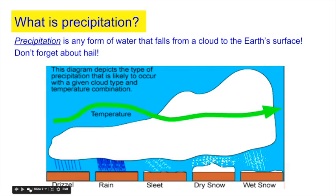What is precipitation? Precipitation is any form of water that falls from a cloud to the Earth's surface. Don't forget about hail. We have drizzle, rain, sleet, dry snow, and wet snow.